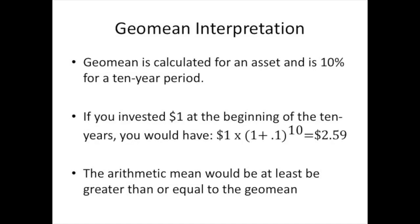I'm going to give an example of the interpretation of the geometric mean. Let's say that the geometric mean is 10% and it was calculated over a 10-year period with yearly periods. Each one of those periods likely varied from that 10%. The geometric mean is interpreted as follows: if you invest $1 at the beginning of the 10 years, you will have $2.59 at the end. The 10% geometric mean raised to the 10 years causes the returns to equal whatever the variability of those returns had been.